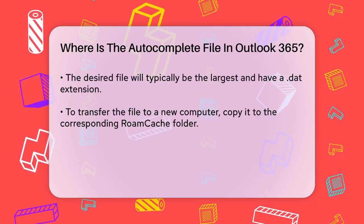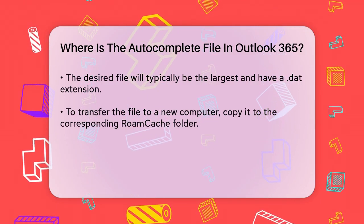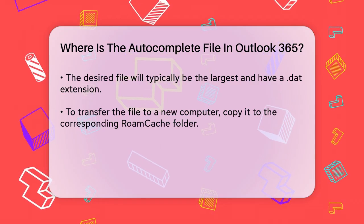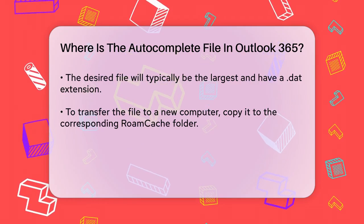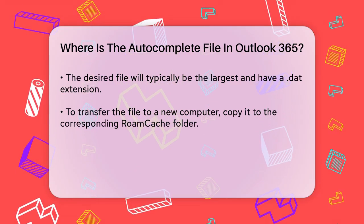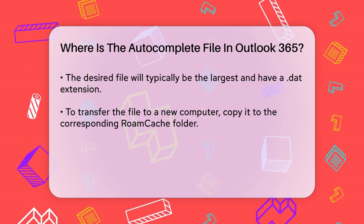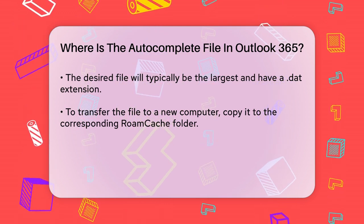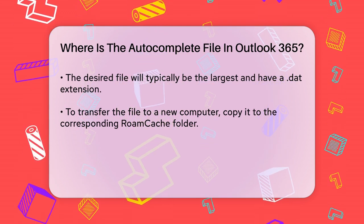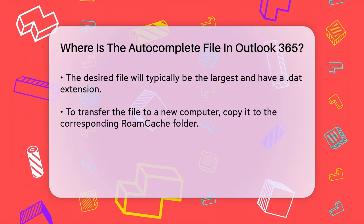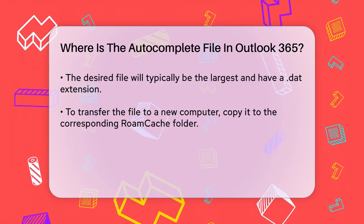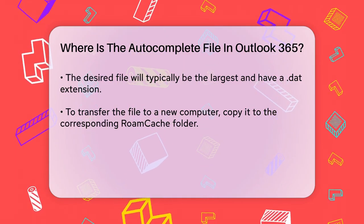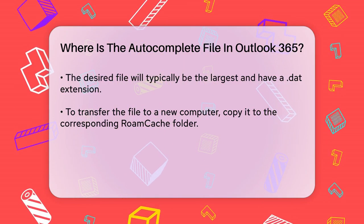If you're transferring this file to a new computer or Outlook profile, you'll need to copy this file and paste it into the corresponding RoamCache folder on the new system. Make sure to rename the existing empty Stream_Autocomplete file on the new system to something like autocomplete-old, and then rename your copied file to match the original name of the empty file.